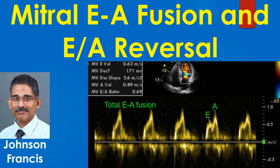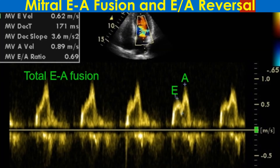Discussion on mitral E/A fusion and E-by-A reversal on Doppler echocardiography, and the assessment of left ventricular diastolic function in the presence of mitral E/A fusion. A transmitral Doppler tracing from the apical 4-chamber view shows varying degrees of fusion of mitral E and A waves. E-by-A reversal is also evident in the later 3 beats due to partial E/A fusion.